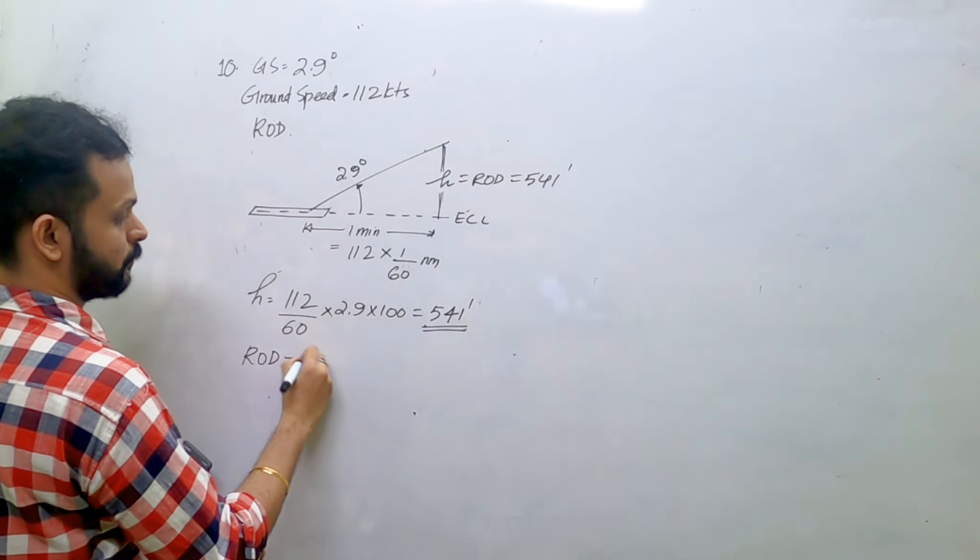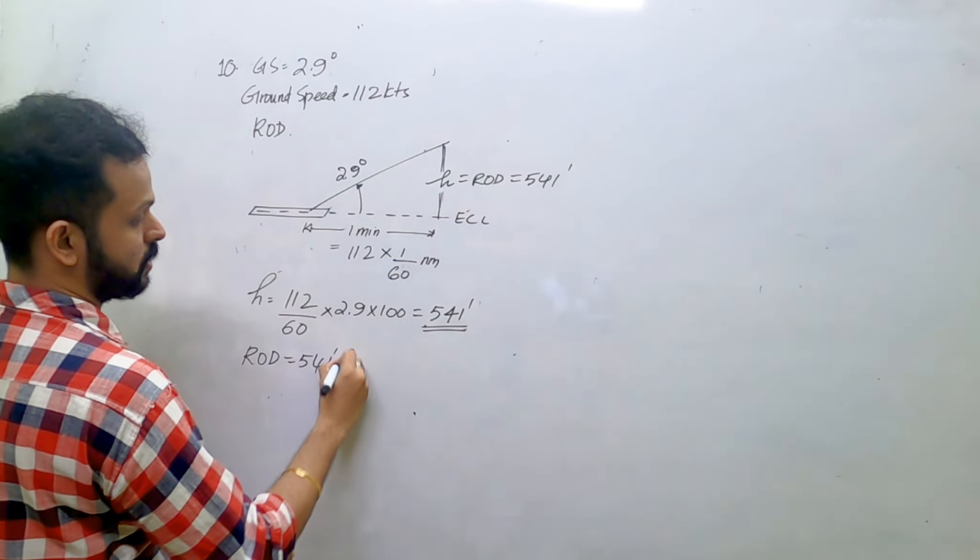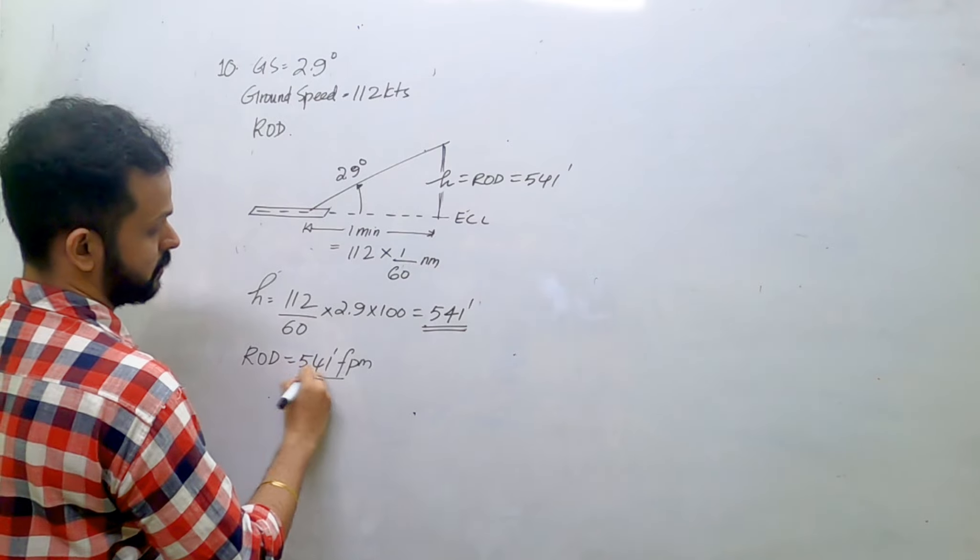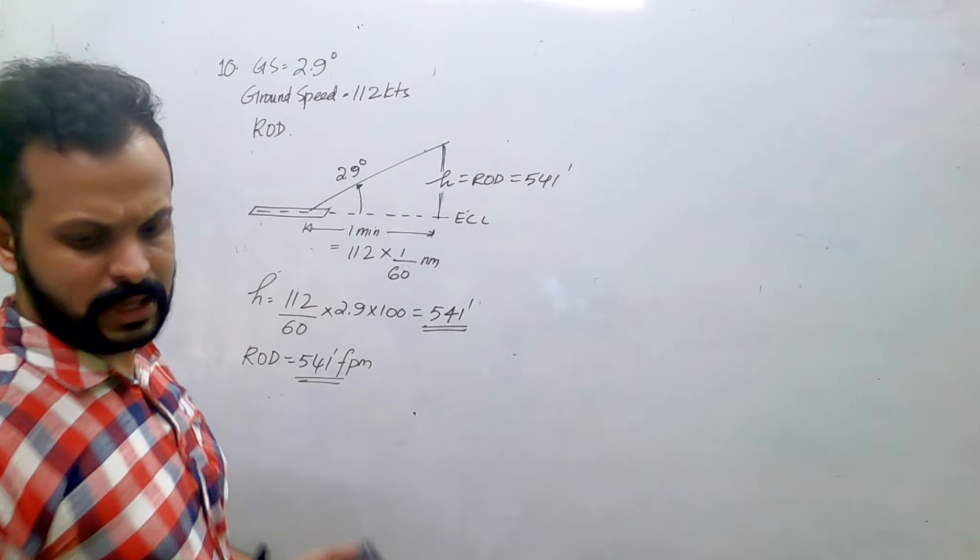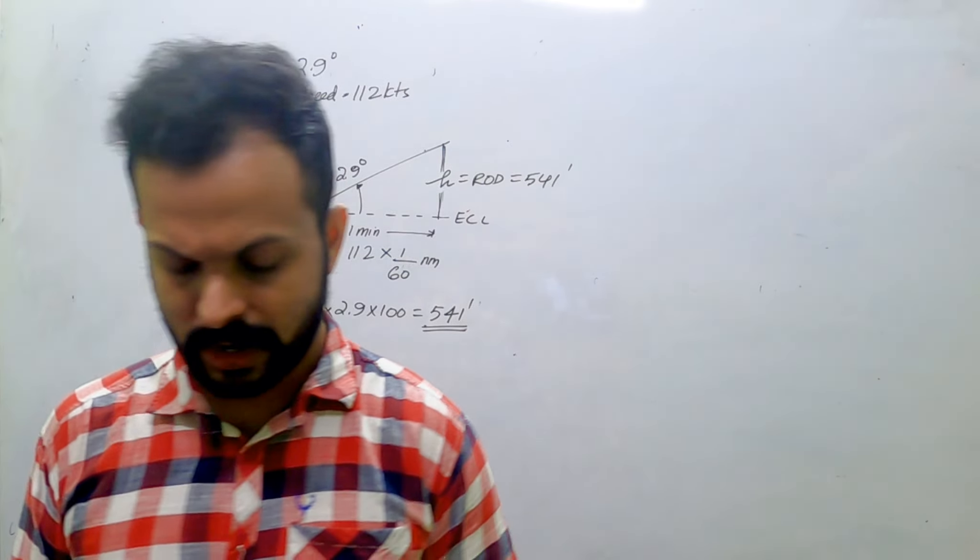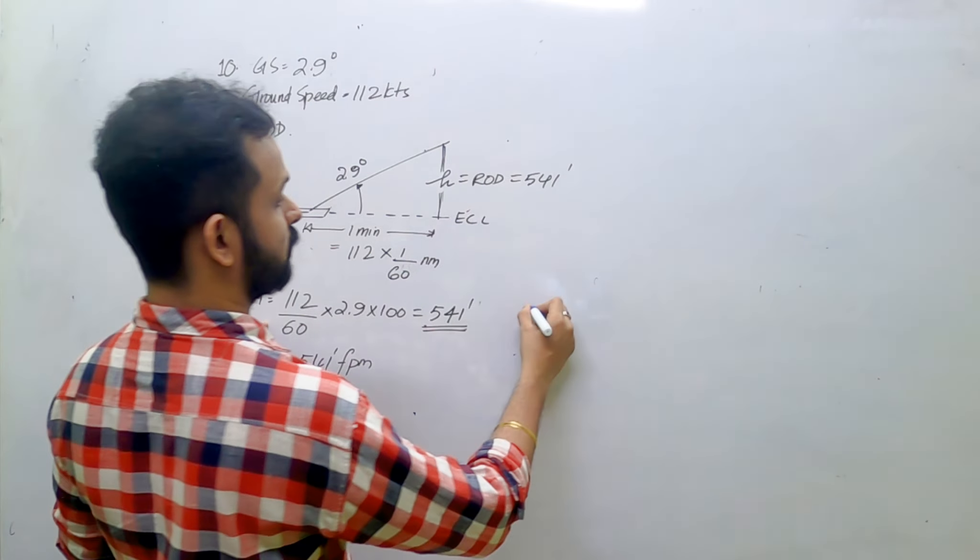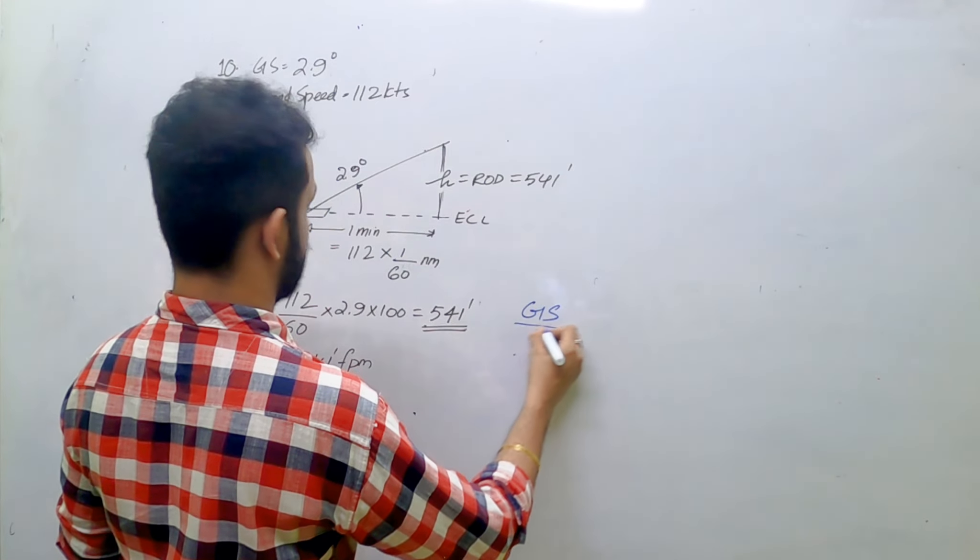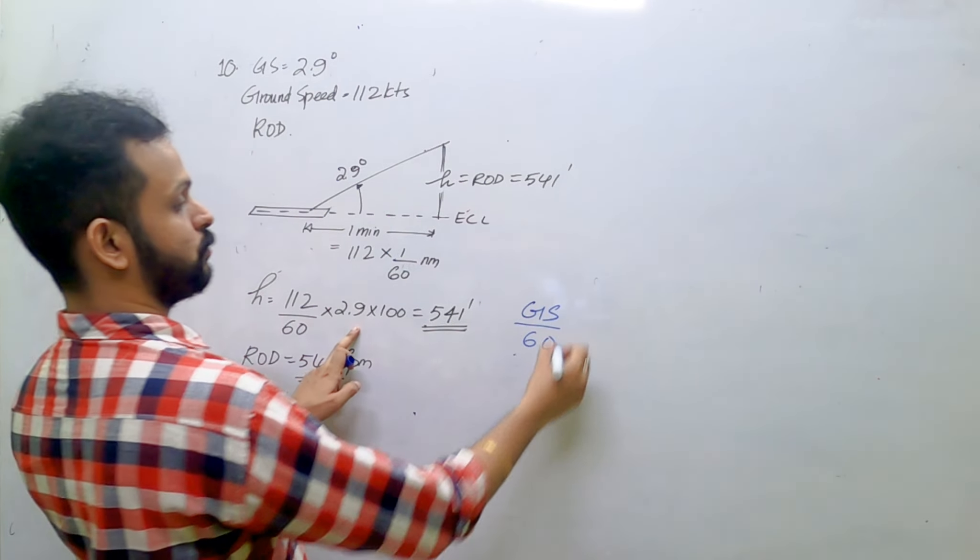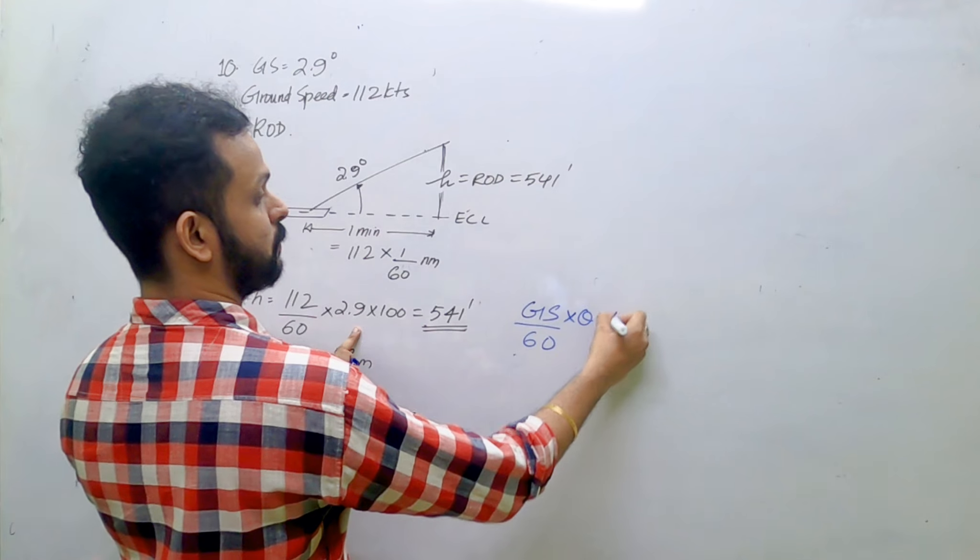It's almost 540 or 541 feet per minute, and I believe the equation that I gave you that day is something to do with this equation which is right here, which is you take the ground speed, you divide the ground speed by 60, and you take the glide slope and you multiply with 100.